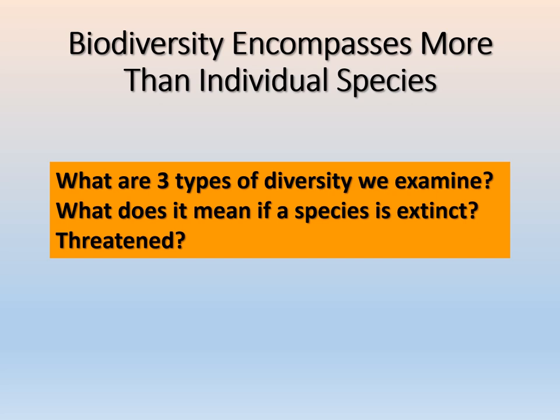The three types of diversity we discussed are ecosystem diversity, species diversity, and genetic diversity. If a species is extinct, that means there are no individuals left of that species. If it's threatened, there are different levels: vulnerable, endangered, and critically endangered — each representing a certain level of risk of becoming extinct in the wild.